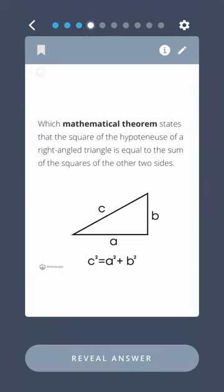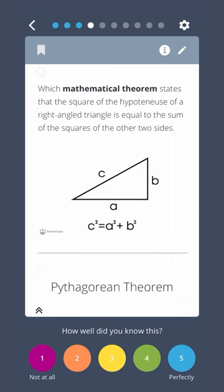Which mathematical theorem states that the square of the hypotenuse of a right-angled triangle is equal to the sum of the squares of the other two sides? Pythagorean theorem.